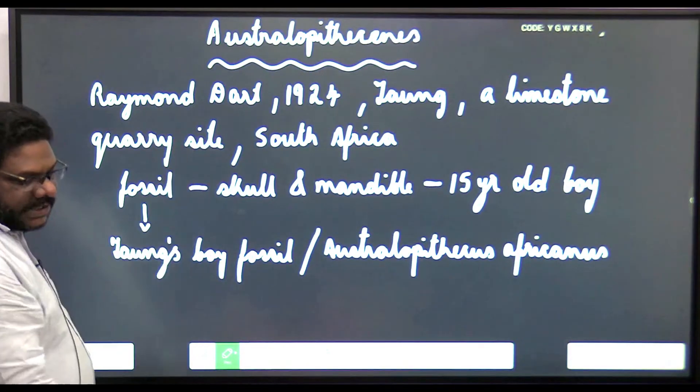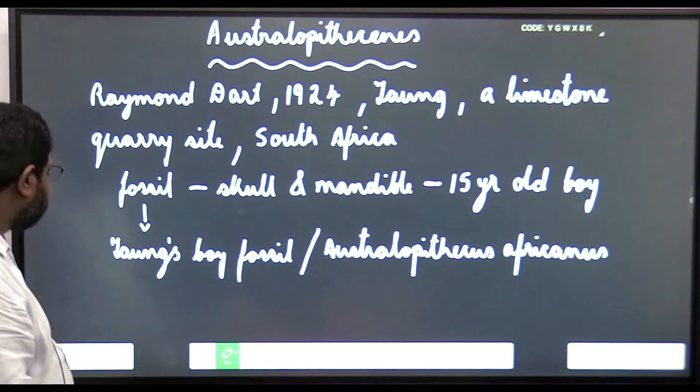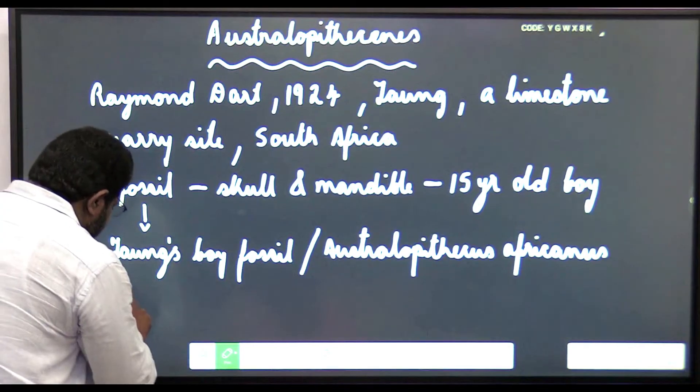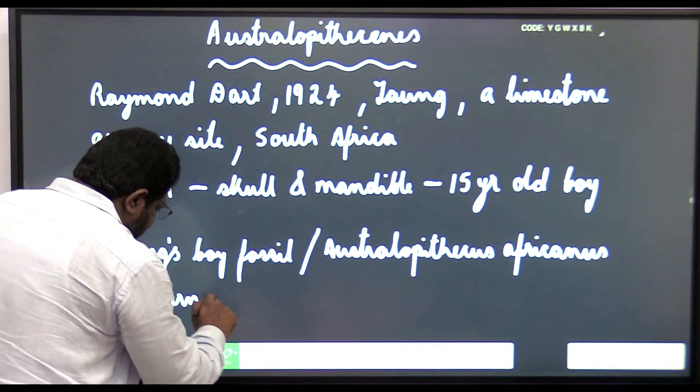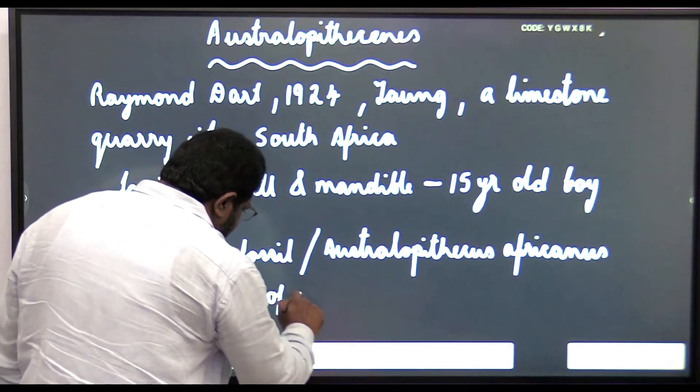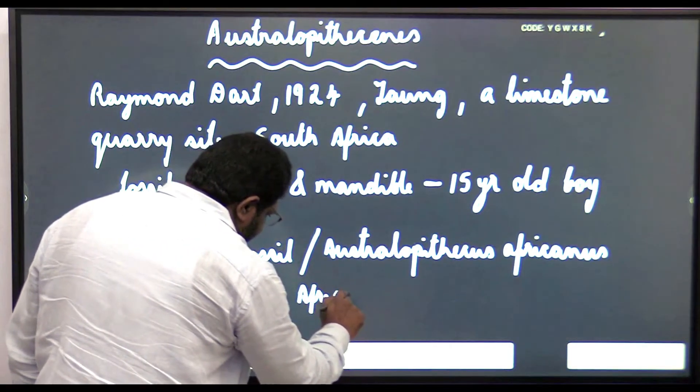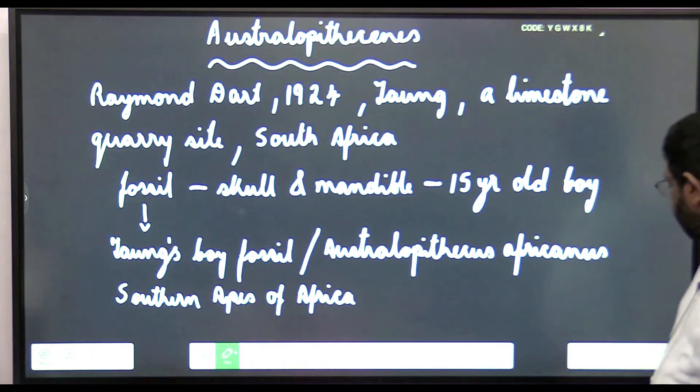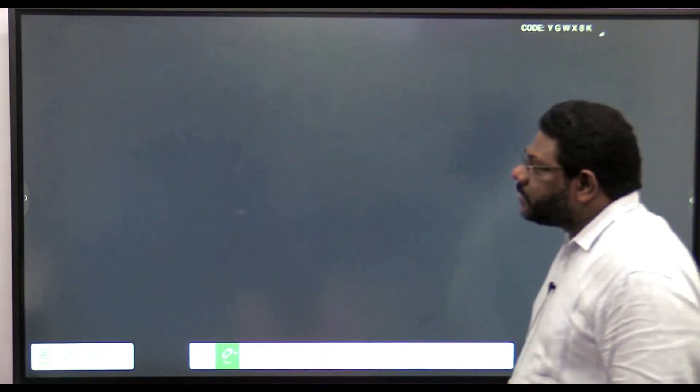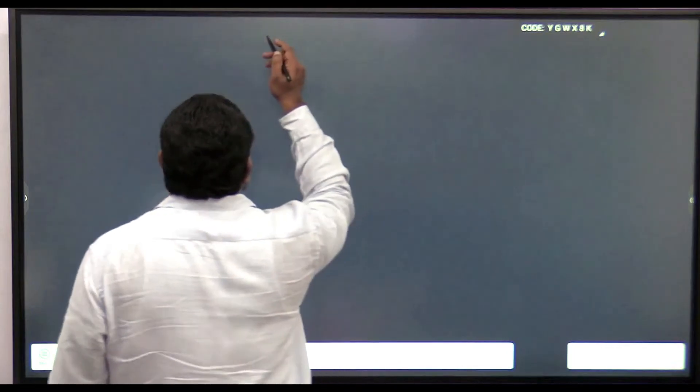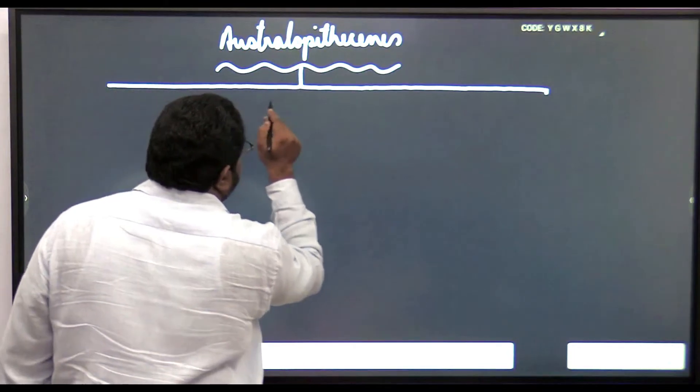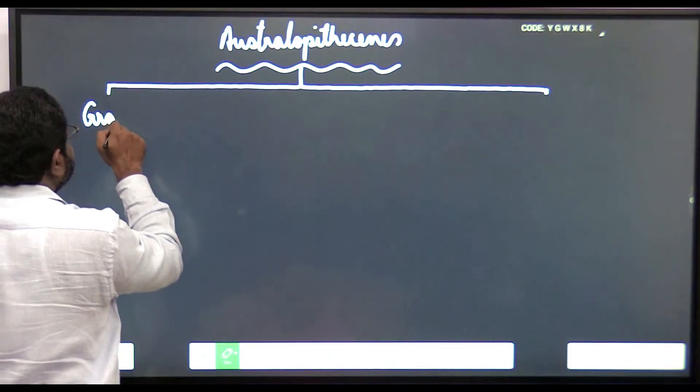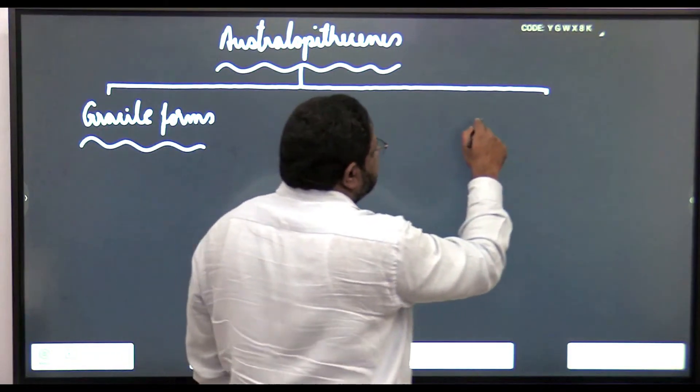Please write: these Australopithecines are known as southern apes of Africa. These Australopithecines are classified into two types: gracile forms and robustus forms.